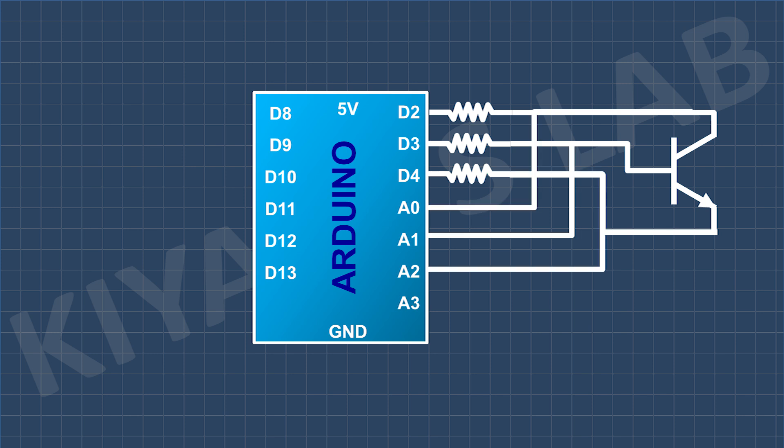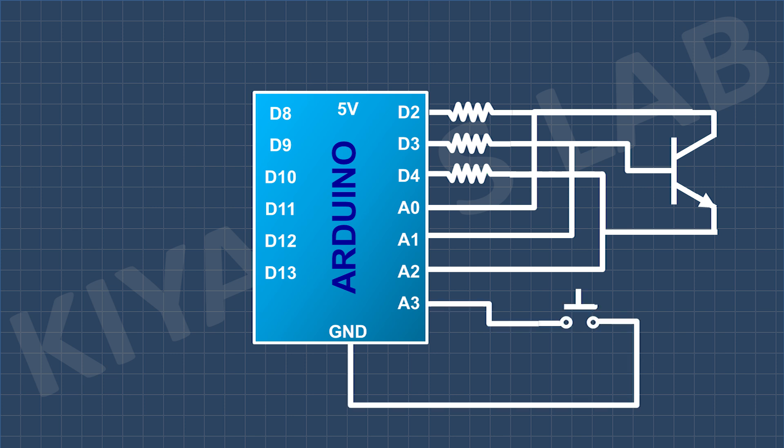Arduino's analog pins A0, A1 and A2 measure the voltage drops across the transistor terminals. A push button is wired to Arduino's pin A3, which is digital pin 17. Pressing it triggers the testing sequence, making the process interactive and user controlled.